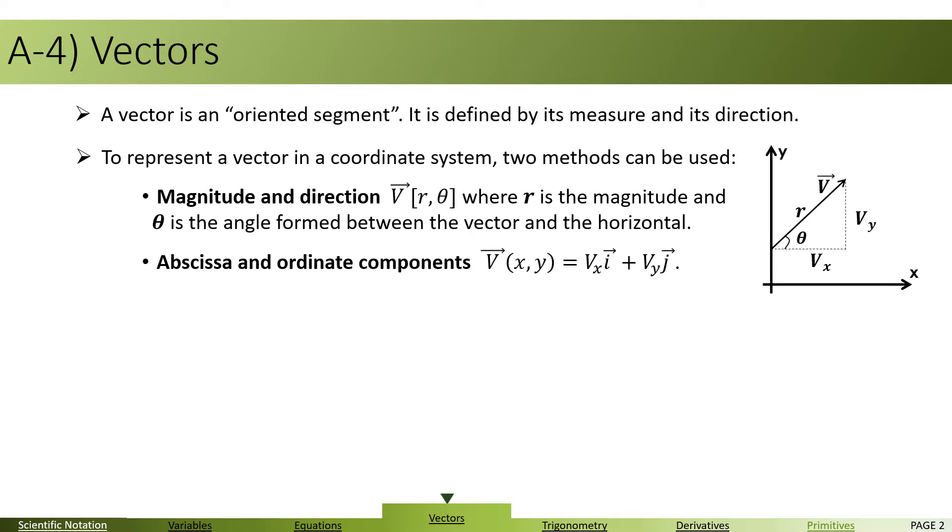The abscissa and ordinate component of a vector, in which we write V(x, y) = Vx along i and Vy along j. You all remember that Vx is called abscissa, and Vy is called ordinate.